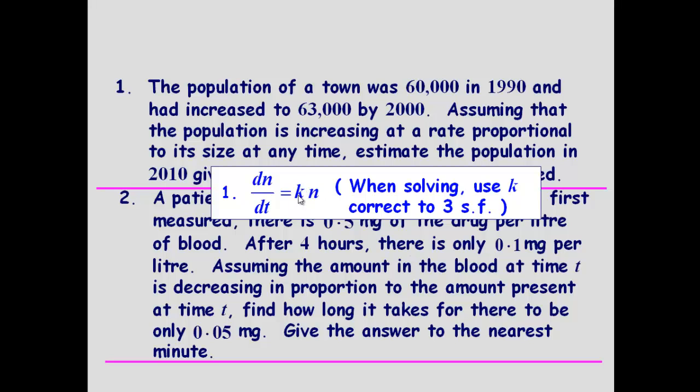When something's increasing proportional to something else, this is how we write it. We write the constant here, that's the rate, but it's increasing proportional to the population itself.